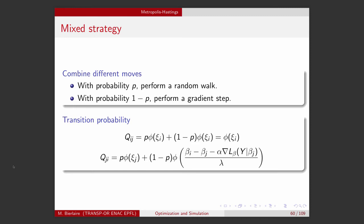The only thing you have to do for a given process, you have to derive the forward and backward probability. So in this case, it's relatively simple. The forward probabilities are the random walk with probability p and the gradient-based with probability 1 minus p.